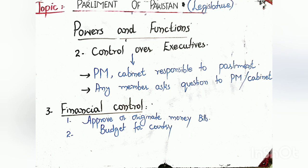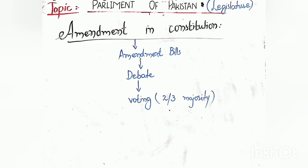The executive — the Prime Minister as head of the executive — also comes from Parliament; Parliament members elect them. Similarly, Parliament has the power to question the Prime Minister or the cabinet, which is also formed from Parliament. For example, any member can ask the Minister of Railways: 'You were given this much budget — where was it spent? Did new coaches arrive? How many new railway tracks were built?' This is the Parliament's control over the executive. Similarly, Parliament has full financial control — the purse of the country — because any budget or bill has to be approved by Parliament. The financial powers specifically belong to the lower house — the National Assembly — and the upper house does not have special financial powers.